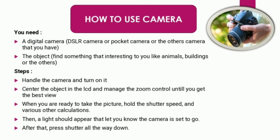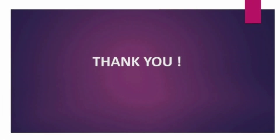The last example is how to use a camera. What you need: a digital camera — DSLR, pocket camera, or whatever camera you have. Find an object or something interesting to you, like animals or buildings. Steps: handle the camera and turn it on, center the object in the frame, and manage the zoom control until you get the best view. When you are ready to take the picture, hold the shutter button — a light should appear to let you know the camera is set to go. After that, press the shutter all the way down. That's all for my presentation about procedure text. Hopefully you enjoyed and understood it. Stay healthy and stay safe. My name is Baryo Anugra. See you later. Wassalamualaikum warahmatullahi wabarakatuh.